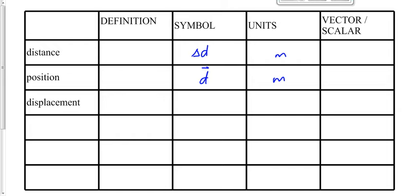Displacement is defined as the change in position — not where you are, but where you are compared to where you were. So the symbol for displacement is delta D with an arrow, and the units are meters. Since position is a vector, displacement is also a vector. Displacement and distance are essentially the same thing, except one has direction and one doesn't.